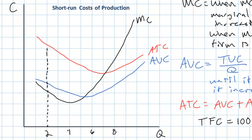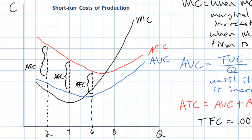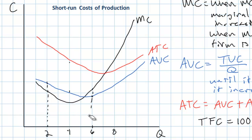At those three different levels of output, the average fixed cost is always the distance between the average variable cost and the average total cost. That distance becomes less and less as output increases, because the average fixed cost is getting smaller and smaller. In accounting, this is referred to as spreading the overhead — as the firm's output increases, the fixed costs are spread out over a wider range of output.